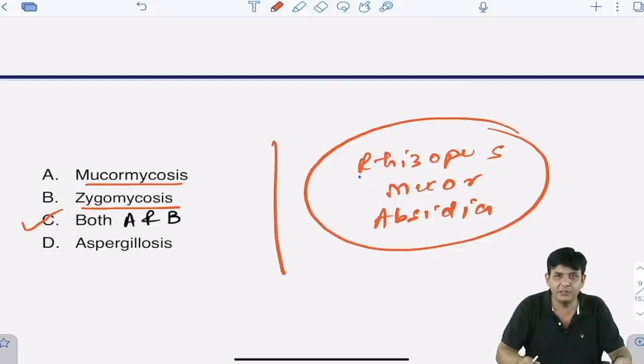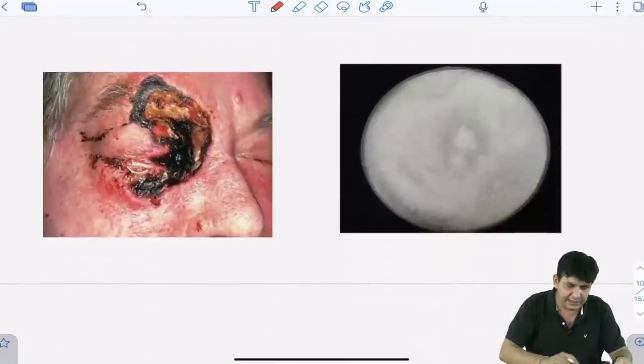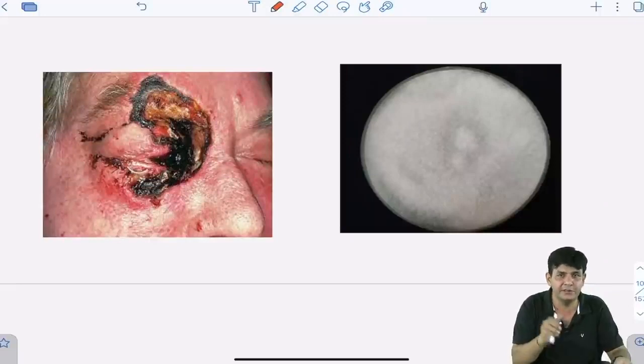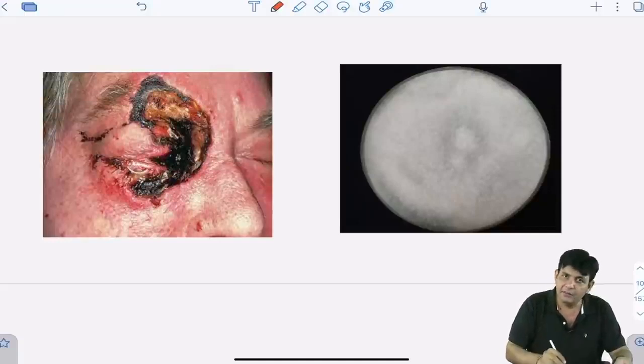Absidia is also termed as Lichtheimia. They can give you this lesion in the exam. This is a blackish crust because of angioinvasion and angiothrombosis—this blackening happens. Because of this only, the name 'black fungus' has come, which is obviously not correct to say. You take the tissue from here—you have taken the tissue biopsy.